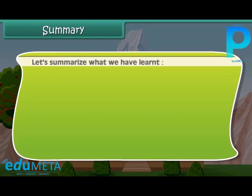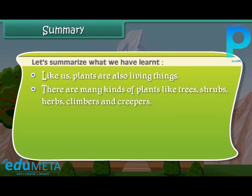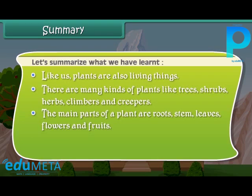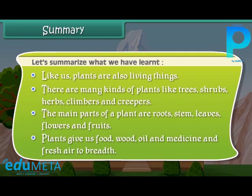Now friends, let us summarize what we have learned so far. Like us, plants are also living things. There are many kinds of plants like trees, shrubs, herbs, climbers, and creepers. The main parts of a plant are roots, stem, leaves, flowers, and fruits. Plants give us food, wood, oil, medicine, and fresh air to breathe.